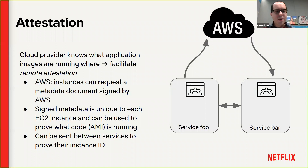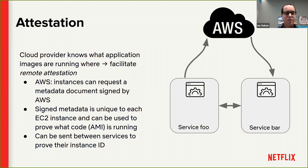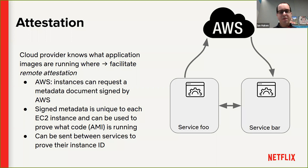How do we deal with this? Most of our stuff runs in the cloud, which enables us to perform remote attestation of our workloads. The cloud provider knows what images are running where, so our cloud provider can facilitate remote attestation. In AWS specifically, an instance is able to request a metadata document describing information about that instance. That metadata document is signed by Amazon using certificates and keys that only the Amazon infrastructure has access to. It's unique for every EC2 instance and proves what the instance ID is and what AMI — what code — is running on that instance.